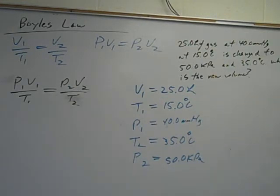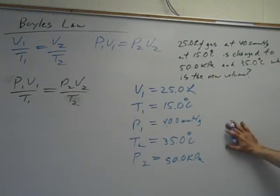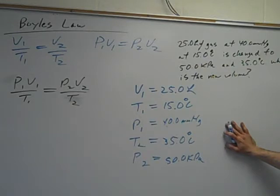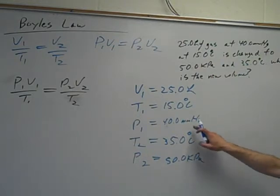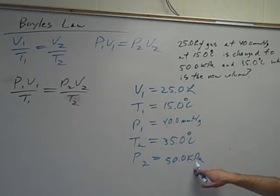Do you change the temperature? You do. So like I said before, the first thing you want to do is write down all of your information. We've got V1 being 25 liters. We've got T1 being 15 degrees Celsius. We've got P1 is equal to 40 millimeters of mercury. We've got T2 being 35 Celsius. And we've got P2 being 50 kPa.